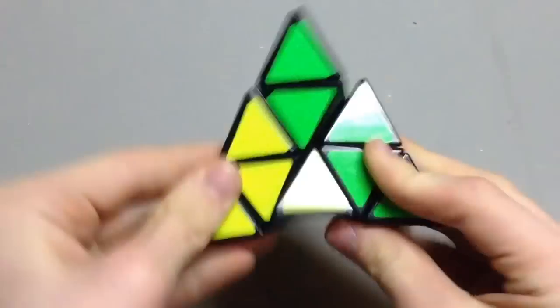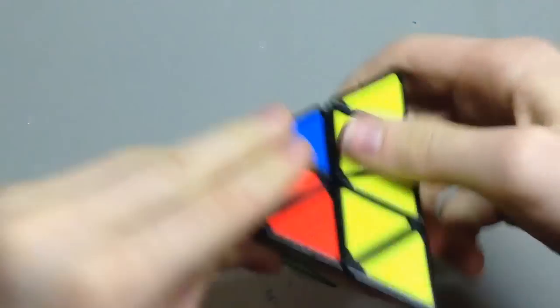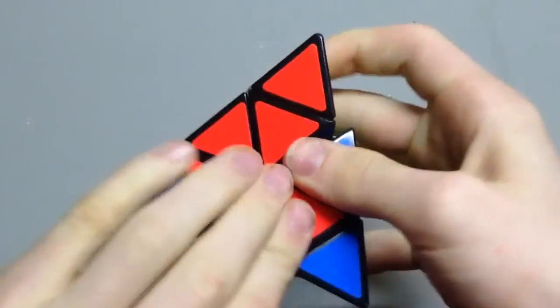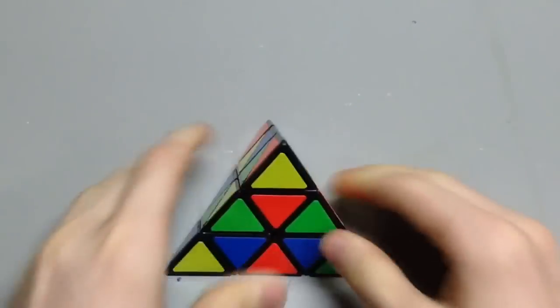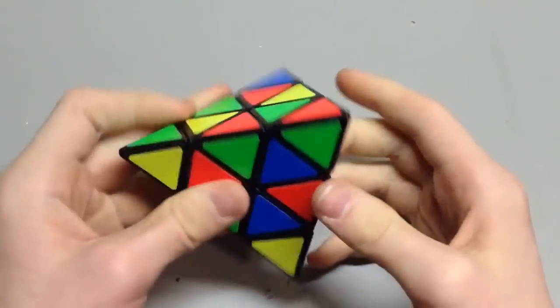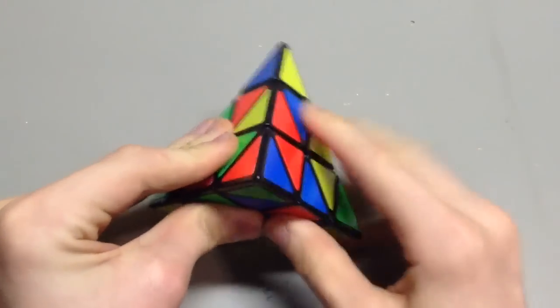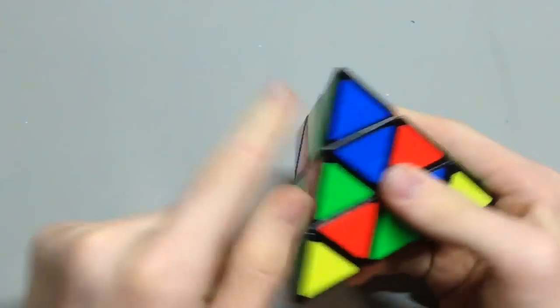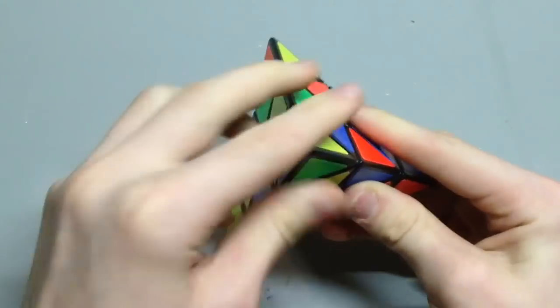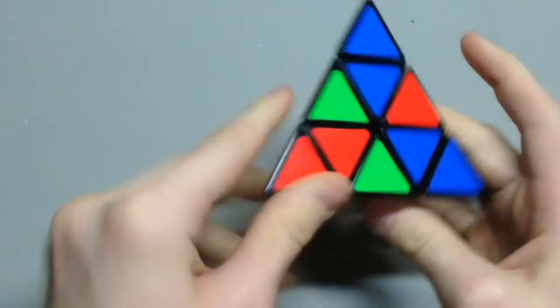So let's scramble it. To start off, I always like to solve the tips first, but some people like to solve them last. But let's just do them first. So this one, we can turn it here, and that one is solved. And that one, that one, and that one. So the tips are solved.